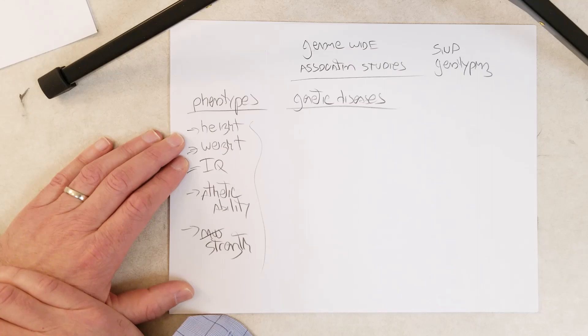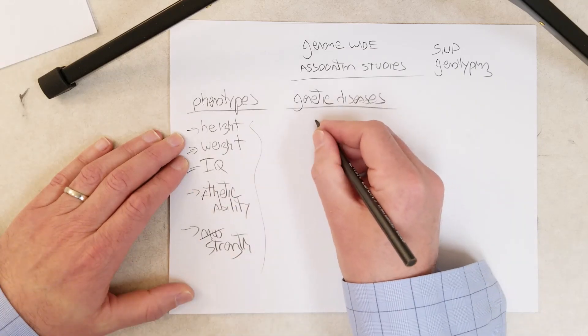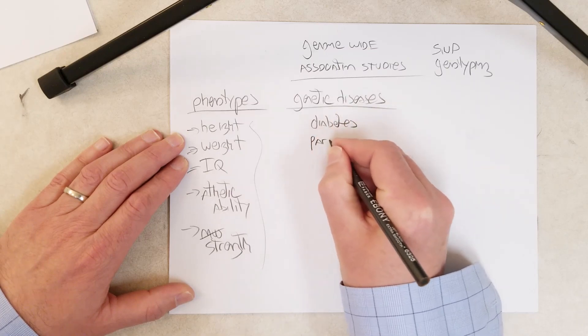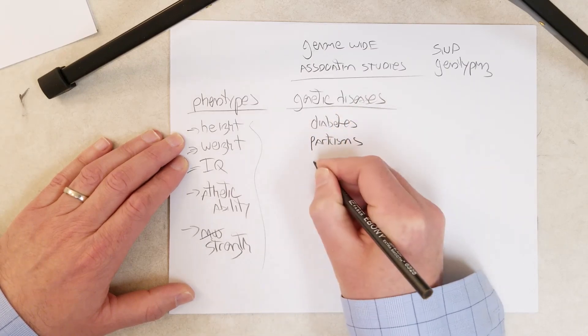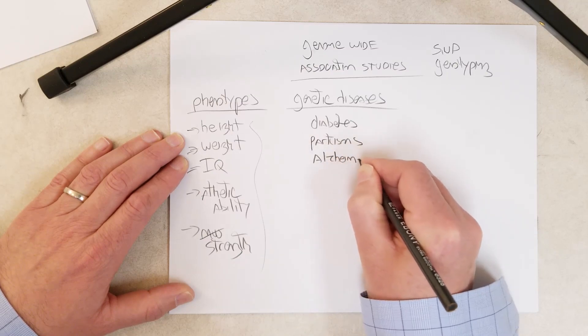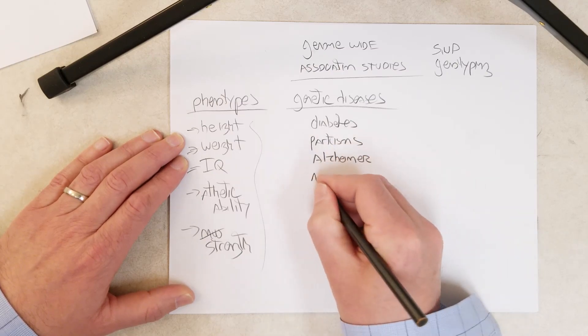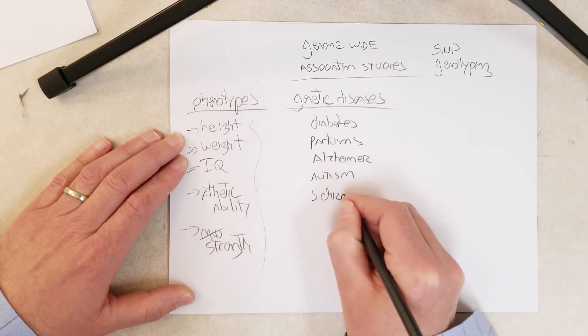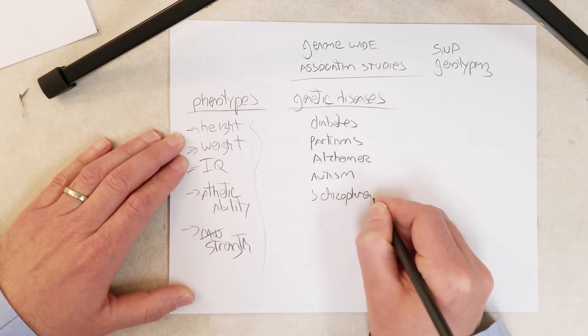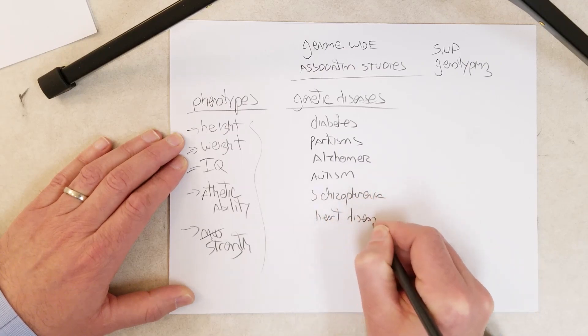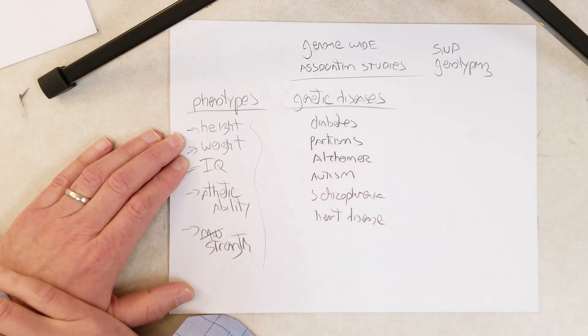Diabetes, Parkinson's disease, Alzheimer's disease, the genetic basis of autism, schizophrenia, heart disease - all these things that are controlled by so many different genes.